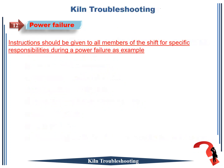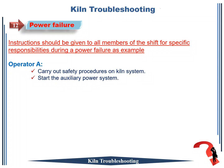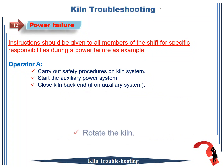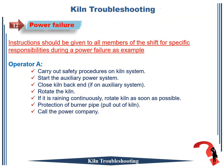Instructions should be given to all members of the shift for specific responsibilities during a power failure. For example, Operator A: 1. Carry out safety procedures on kiln system. 2. Start the auxiliary power system. 3. Close kiln back end if on auxiliary system. 4. Rotate the kiln. 5. If it is raining continuously, rotate kiln as soon as possible. 6. Protection of burner pipe — pull out of kiln. 7. Call the power company.